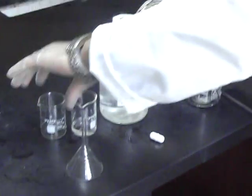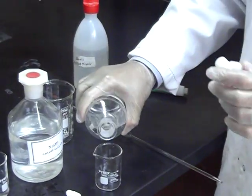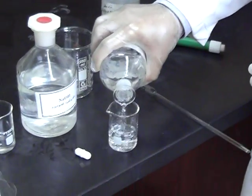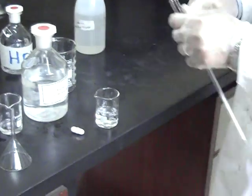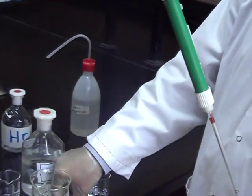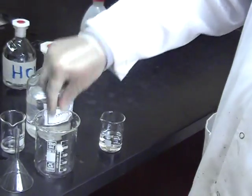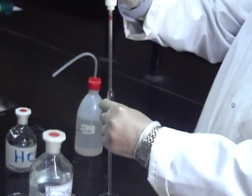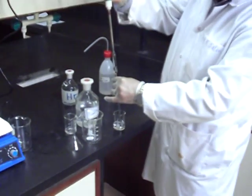To start the experiment, first we have to pipet 10 ml of the unknown hydrochloric acid solution using the pipette. Take the 250 ml glass beaker, put the magnet there, and pipet 10 ml exactly of the HCl.